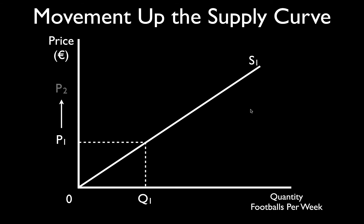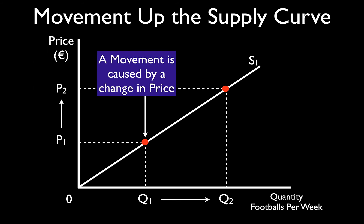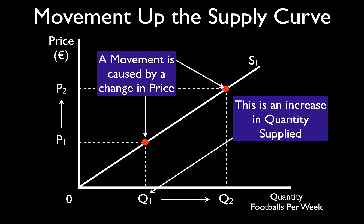There is no movement unless price changes. When the price rises to P2, there is an increase in quantity supplied — a movement up the supply curve from one point to another. The supply curve itself has not changed. The movement from P1 to P2 causes quantity supplied to increase from Q1 to Q2. What has changed is price, and that causes a movement which causes a change in quantity supplied.